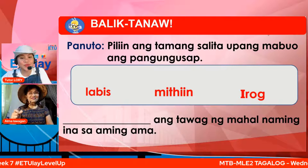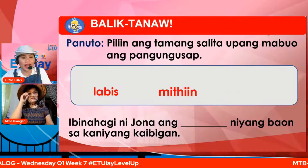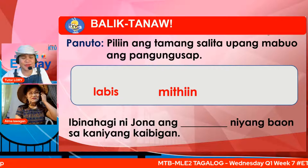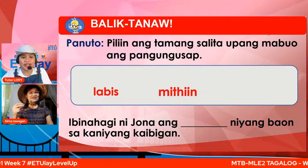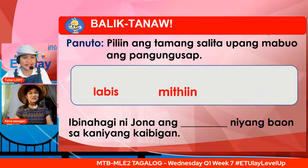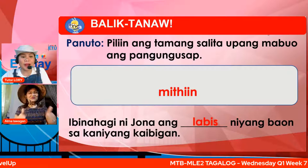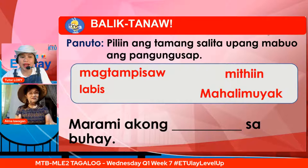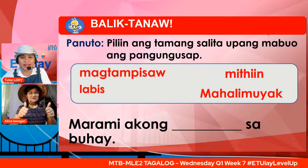Para sa ating pang-apat na katanungan — ibinahagi ni Jokna ang patlang na baon sa kanyang mga kaibigan. Ano ang naglalarawan sa baon ni Jokna? Labis o miti? Kung ang iyong sagot ay labis — labis o sobra ang baon ni Jokna, tama! Pang-lima: Marami akong patlang sa buhay. Ano kaya ang gusto niya sa buhay? Magtampisaw, miti, labis, o mahalimuyak? Kung ang iyong sagot ay miti, tama! Marami akong miti sa buhay.